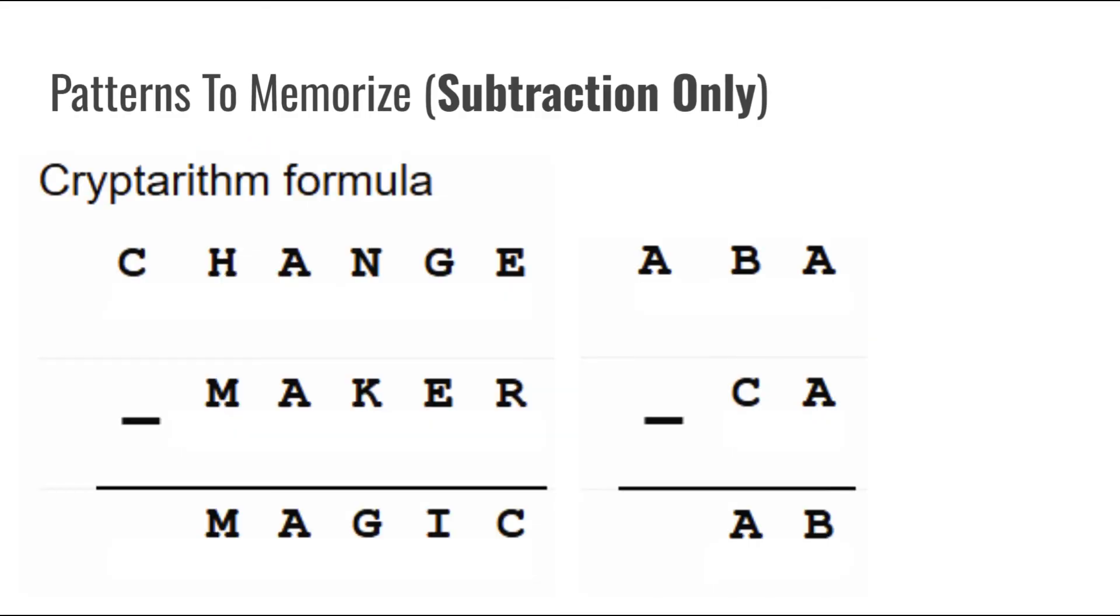Continuing with the patterns you need to memorize, there are more you need to know for subtraction cryptarithms instead. Starting with the pattern on the left, we are going to see that there is only one placeholder in the first column. We can see that C is going to be equal to 1 now due to the regrouping method. If we see the answer to the cryptarithm, there is no placeholder under the C which means that when we regroup from the C, the new value needs to be 0.